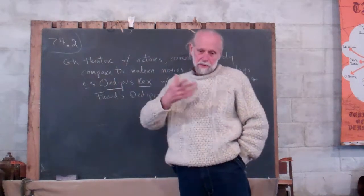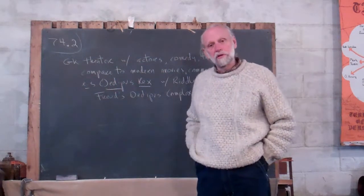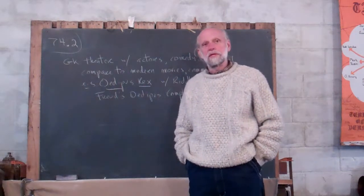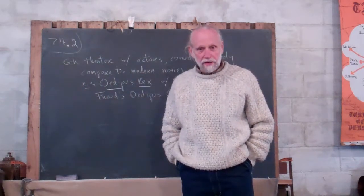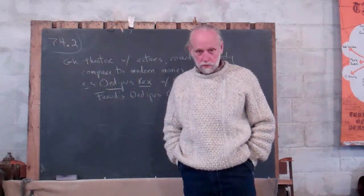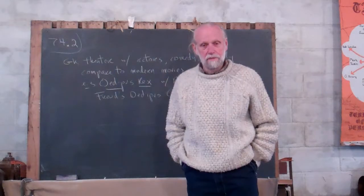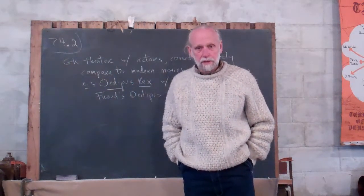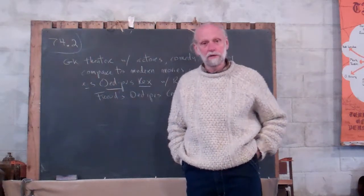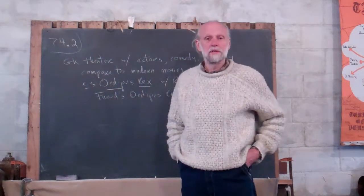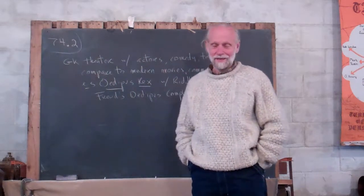So when young Oedipus becomes a young man, he wants to know what his future holds, so he goes to the oracle of Delphi to find out. And the oracle of Delphi says, you are fated to kill your father and marry your mother. And Oedipus says, no way. That's not going to happen. I'm never going home. I'll never go back. I'll never see my mother and father again. So he doesn't go back to that city that I can't think of.